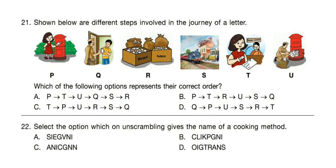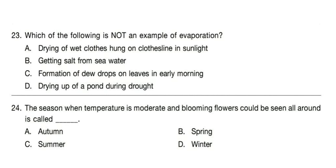Question 22: Select the option which on unscrambling gives the name of a cooking method. Correct answer is option B — Roasting. Question 23: Which of the following is not an example of evaporation? Read the statements carefully and select your answer. Correct answer is option C.